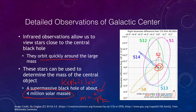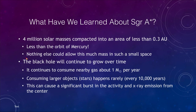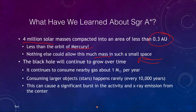Why does it have to be a black hole? Because the size is so small — there's no other way you could get that much material into such a small space. Sagittarius A* is four million solar masses compacted down to an area of less than 0.3 astronomical units — that means four million suns within the orbit of Mercury. There is simply no way to put that much mass in such a small space without it being a black hole.